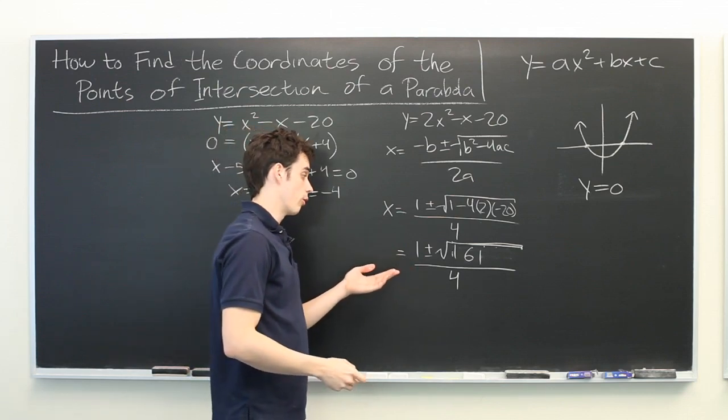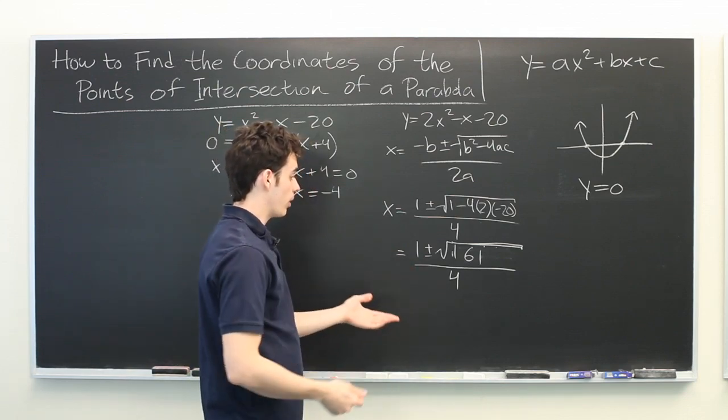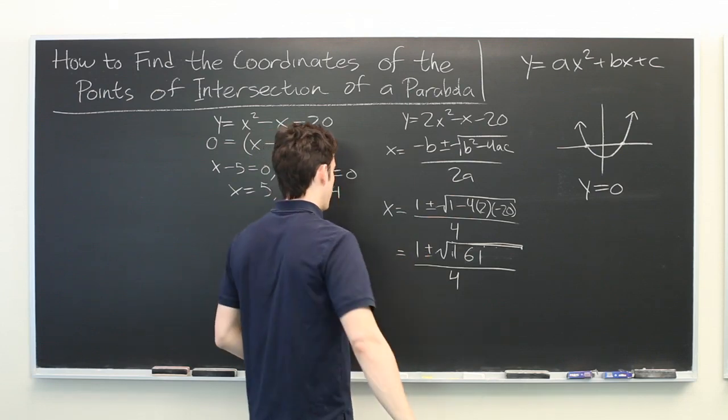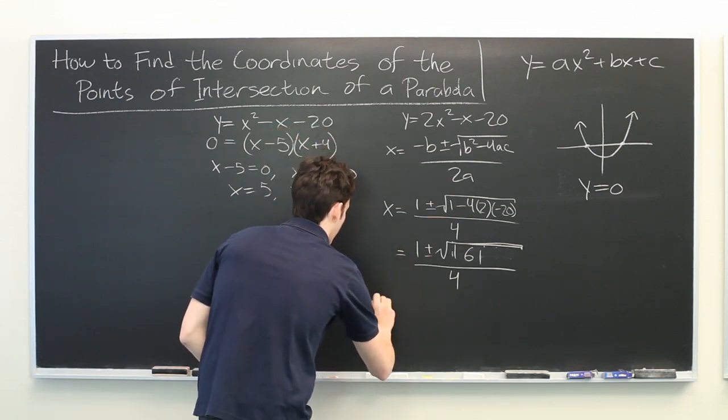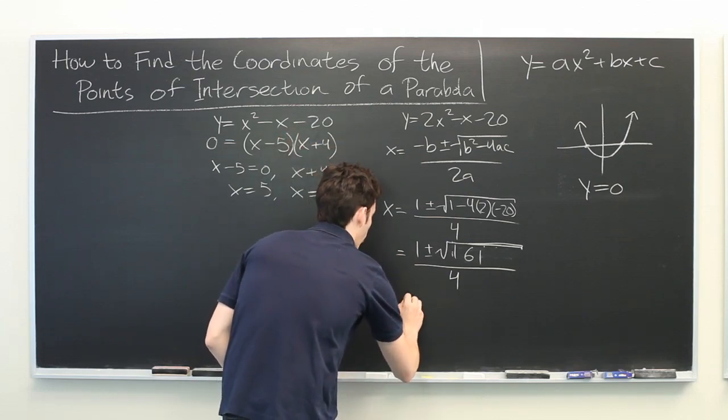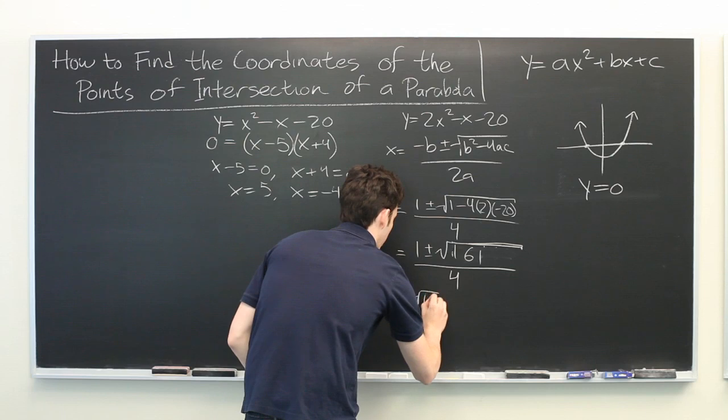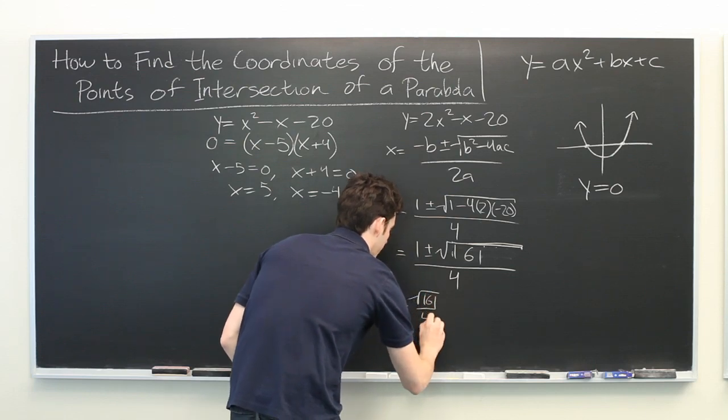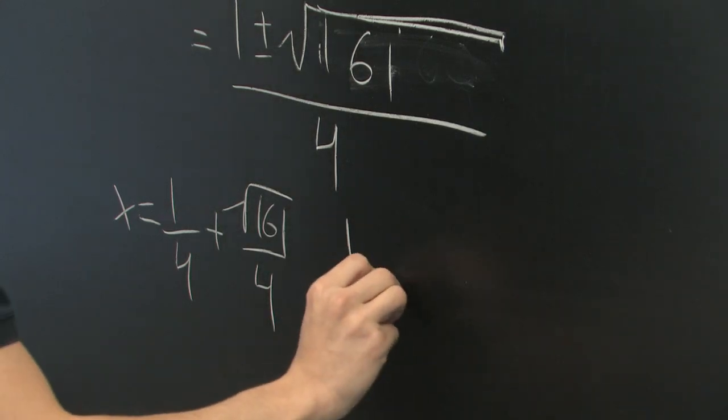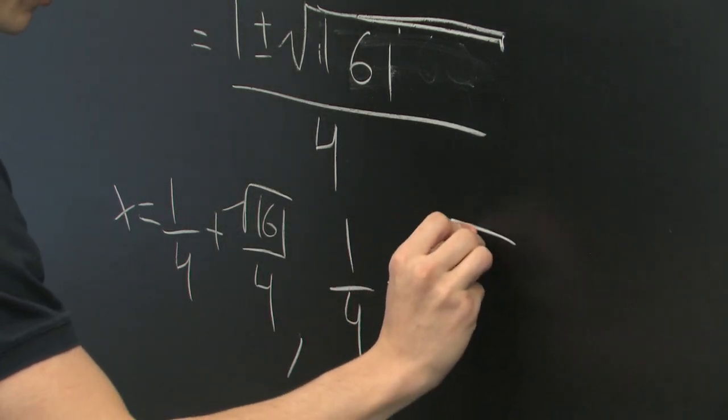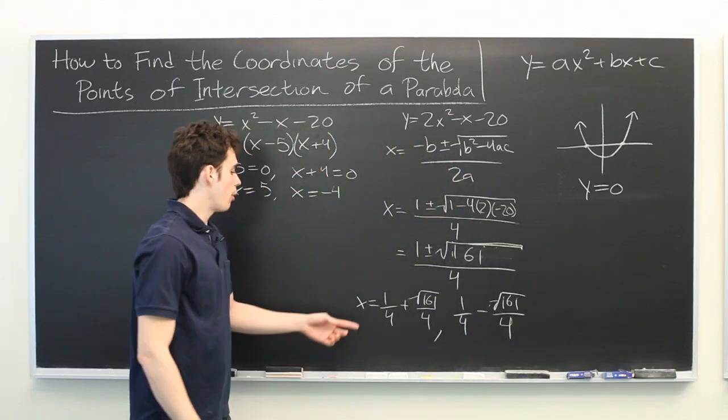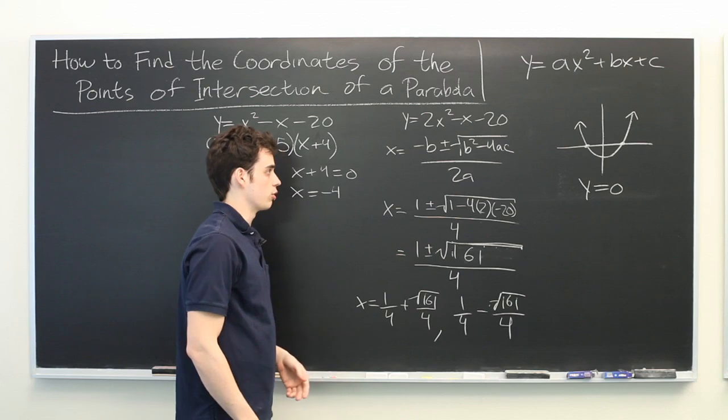Now this is not a very neat formula, but it is a perfectly valid way of expressing a number. The plus or minus sign indicates that we have two solutions here. We have x equals 1 fourth plus the square root of 161 over 4, and we have 1 fourth minus the square root of 161 over 4. Both of these again are perfectly valid ways of expressing the solution.